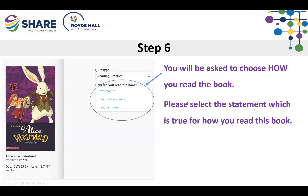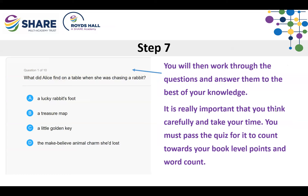They will be asked to choose how they've read the book — whether they've read with somebody else at home, read by themselves, or were read to. For most students, they will have been reading independently or may have read with somebody else at home. They select the statement which is most true and then complete the quiz. There are usually between 5 and 20 questions depending on the length of the book, and they need to concentrate because they have to pass the quiz for it to count towards their book level points and word count, which is how we track engagement.